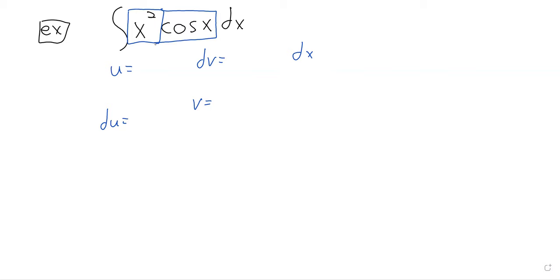What should we let u be? X squared. X squared, thank you. At least if we're following LIATE, we would let u be an algebraic function before we let it be a trig function. And that leaves dv to be the cosine of x dx. To go from u to du, you simply differentiate and you throw the dx in. To go from dv to v, it's the other way around. We never use the constant of integration at this stage. V will be the sine.